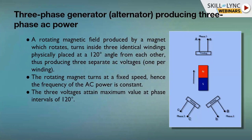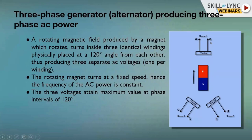In power generation, stators develop a three-phase AC voltage of 11 kV, 13.2 kV, or 18 kV. A prime mover — a turbine driven by water or another energy source — rotates the rotor. As the rotor's north and south poles sweep across the stationary stator conductors, three-phase AC voltage is developed. That is how three-phase AC generation works in brief.